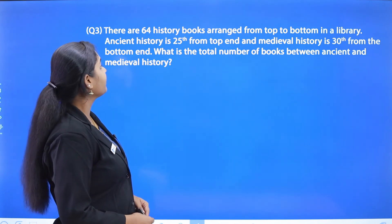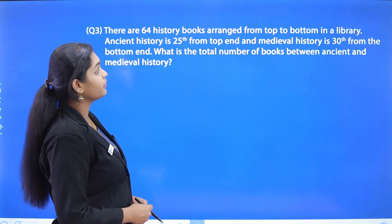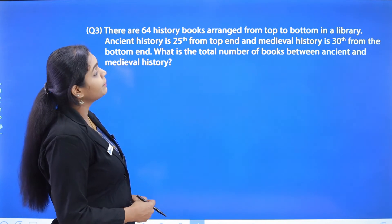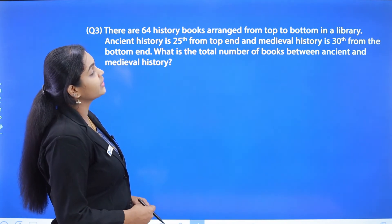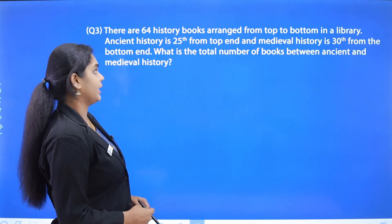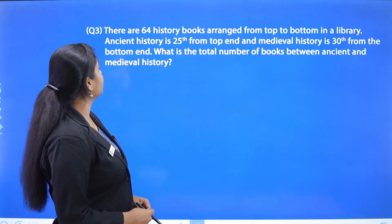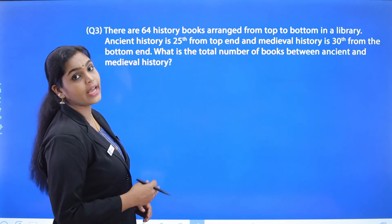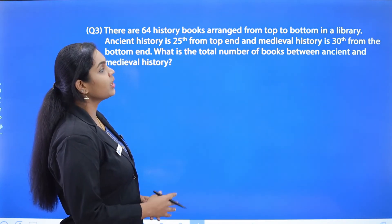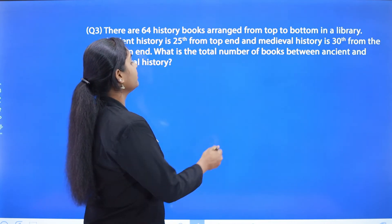Question number 3: There are 64 history books arranged from top to bottom in a library. Ancient History is 25th from the top end, and Medieval History is 30th from the bottom end. What is the total number of books between Ancient and Medieval History? Here, a top-to-bottom arrangement is given.